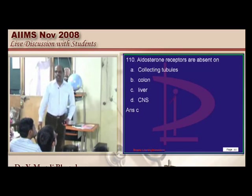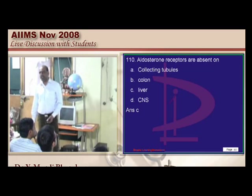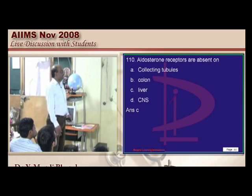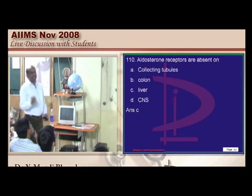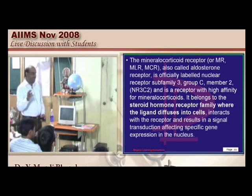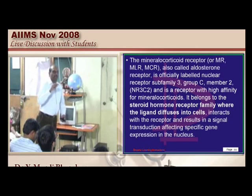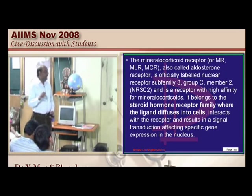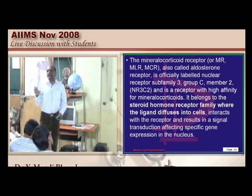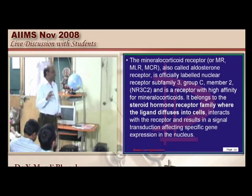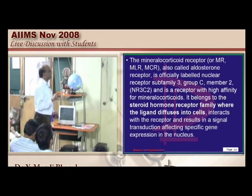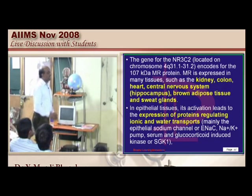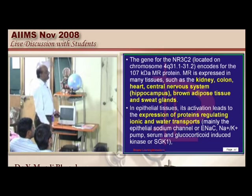Where are aldosterone receptors located? Fundamentally, aldosterone receptors are present on the kidney, colon, heart, CNS, brown adipose tissue, and sweat glands — but not in the liver. So that becomes the answer. Colon, collecting tubules, and CNS all have aldosterone receptors.